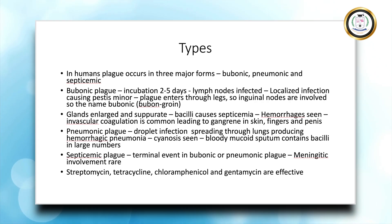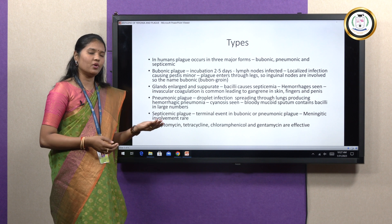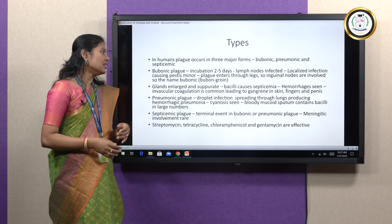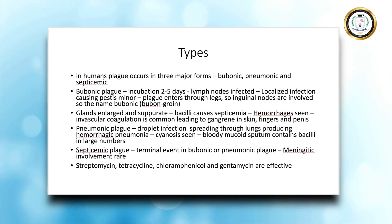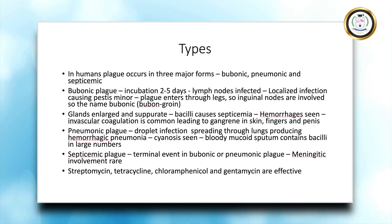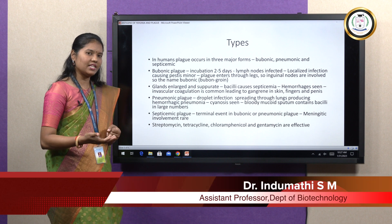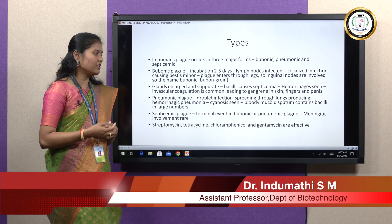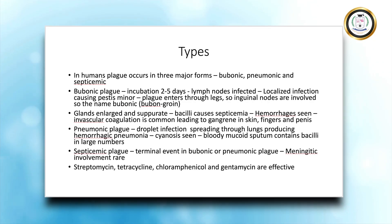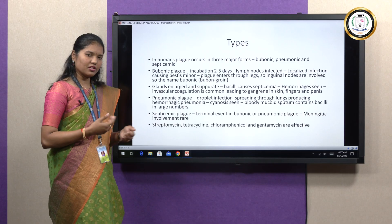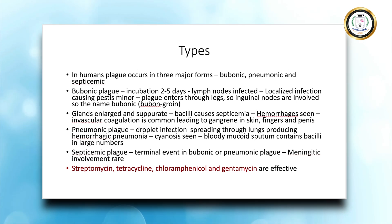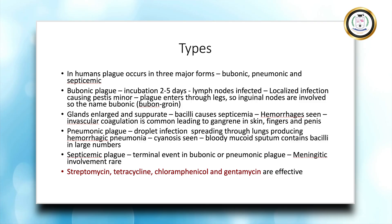Septicemic plague is generally a terminal event for bubonic and pneumonic plague, and rarely occurs as a separate infection. In septicemic plague, local sepsis is formed in internal organs — the organism enters the bloodstream, multiplies, produces toxic products, and causes septic shock in the internal organs. Meningitic involvement is very rare. When it comes to treatment, the drugs of choice are streptomycin, tetracycline, chloramphenicol, or gentamicin, administered in the earlier stages of the disease to prevent mortality.